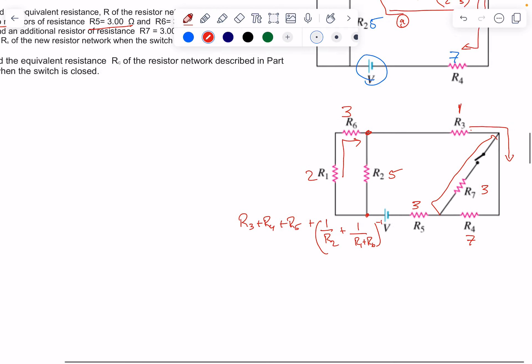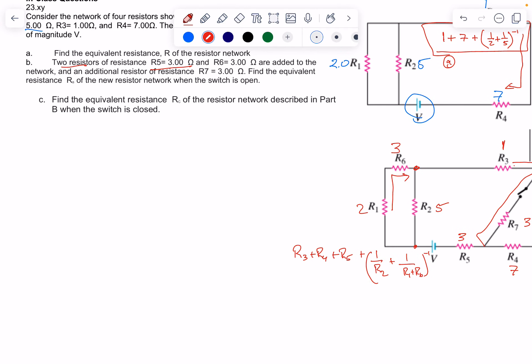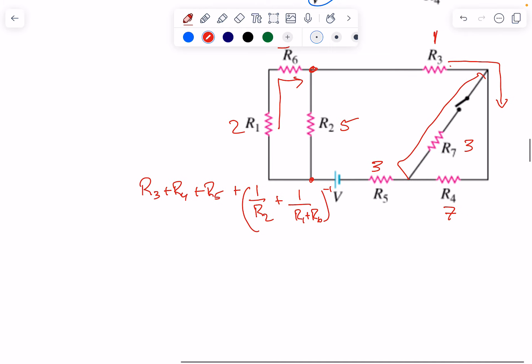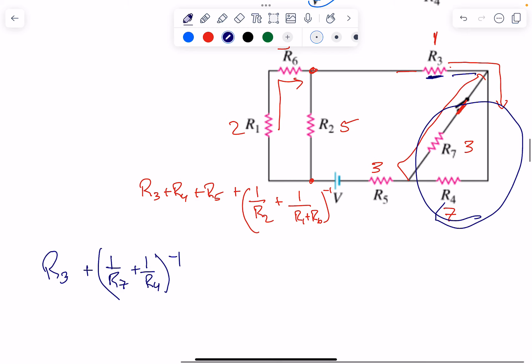What happens when you close the switch? When the switch is closed, we start with R3. I reach a branch: (1/R7 + 1/R4)^-1. Now we're here and we're going to here, that's in series plus R5.